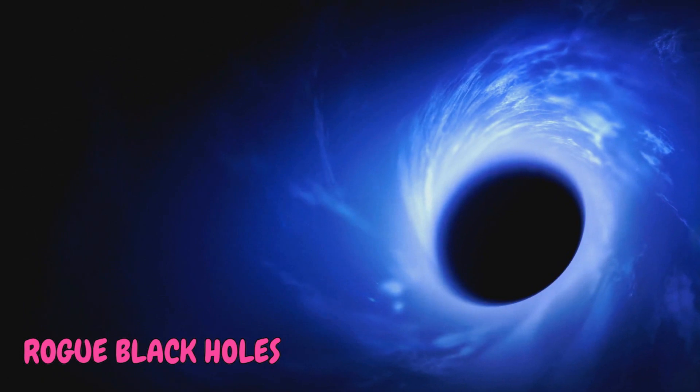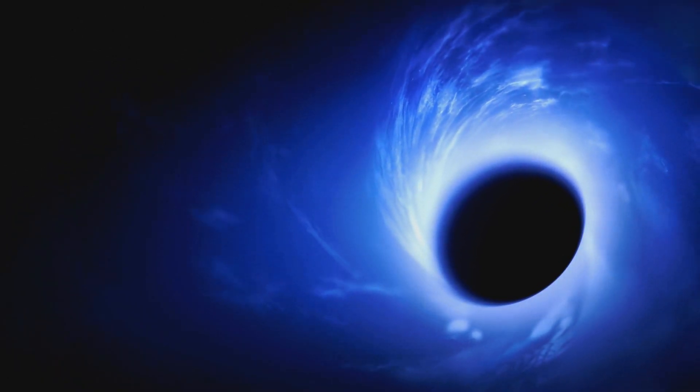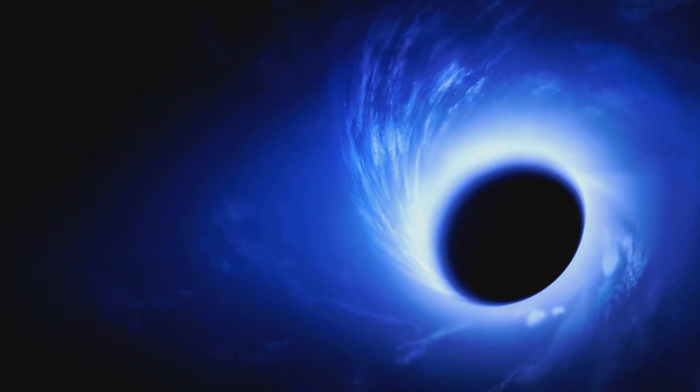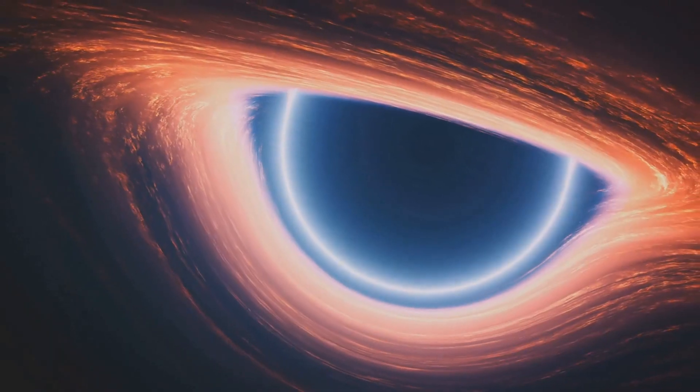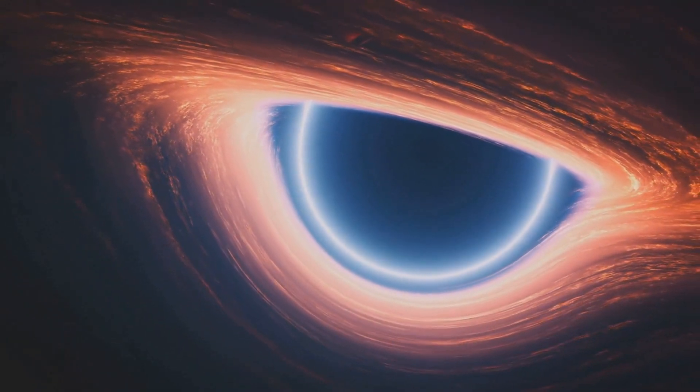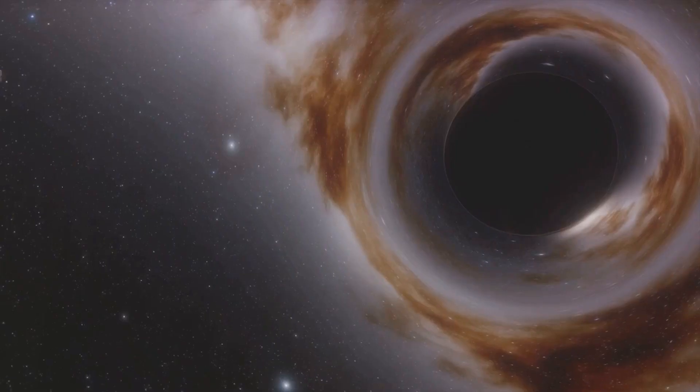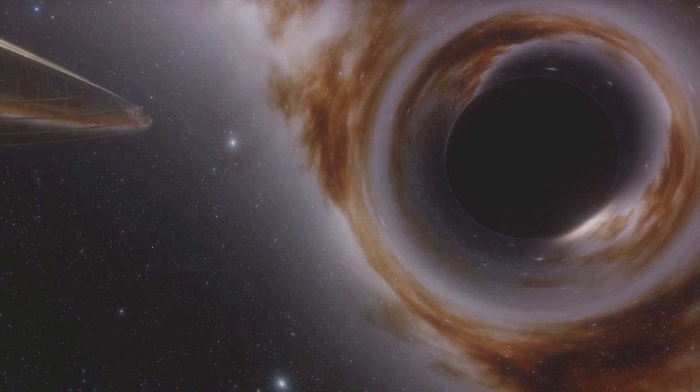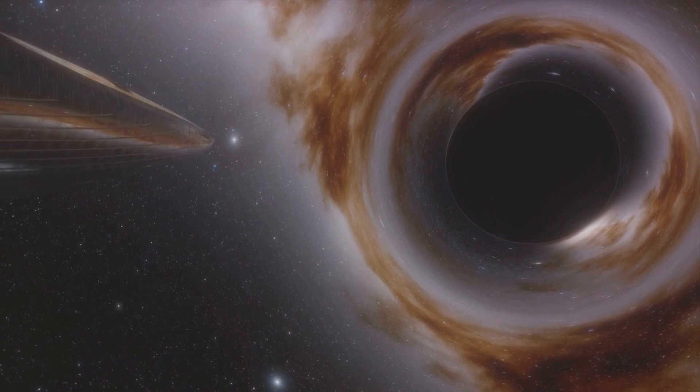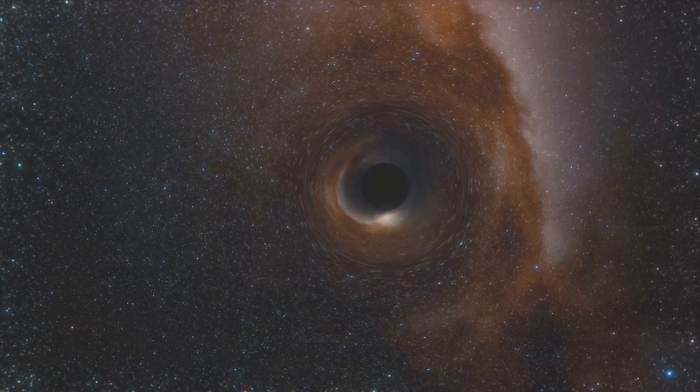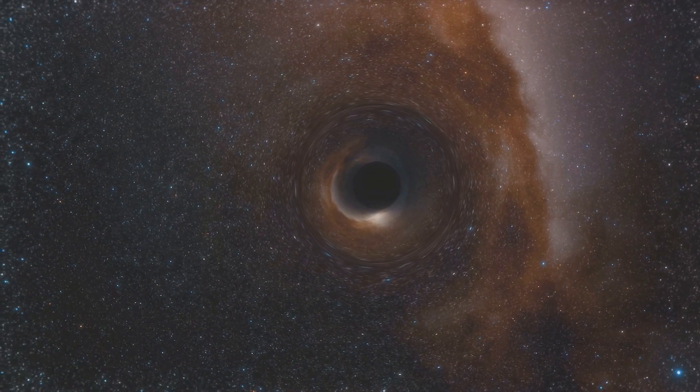Number four on our list is Rogue Black Holes. A rogue black hole, as the name suggests, is a black hole that doesn't play by the rules. Floating freely through the cosmos, these celestial entities are not anchored to any galaxy. They are the stellar remnants of massive stars, having collapsed under their own gravity, creating a region of space-time where not even light can escape.